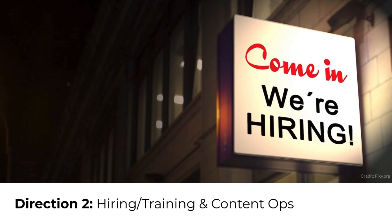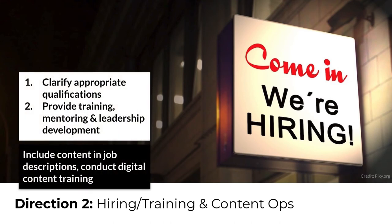The second direction for a content strategy based on operations maturity level is hiring or training. In the IPMM, this characteristic focuses on the level at which an organization hires qualified content professionals and develops them after hiring. For organizations with lower maturity levels, a strategy should focus first on establishing clear qualifications for content professionals. It might also involve adding content creation or management into job descriptions for others involved in content publishing operations. Training opportunities have to be provided in industry best practices. For organizations with higher maturity levels, strategy might expand mentoring and leadership development for content professionals.